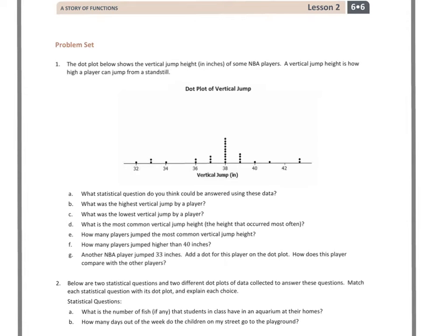Hello everyone, this is grade 6, module 6, lesson 2, problem set. For number 1 it says, the dot plot below shows the vertical jump height in inches of some NBA players. A vertical jump height is how high a player can jump from a standstill. And we see that there's dots there, and each dot is going to represent one NBA player.